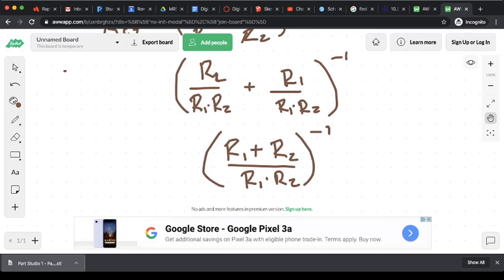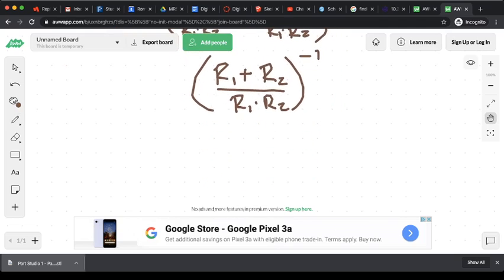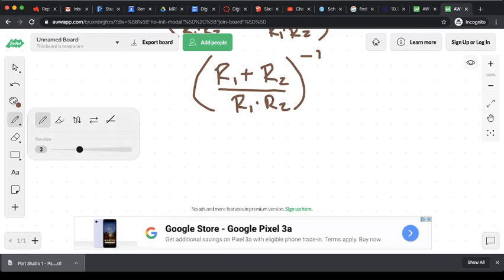And we know that little inverse symbol, that exponent with the negative one, just means flip the fraction. And so if I flip the fraction, I'm going to have R1 R2 on the top, divided by R1 plus R2 on the bottom.